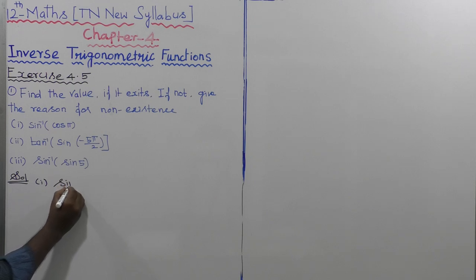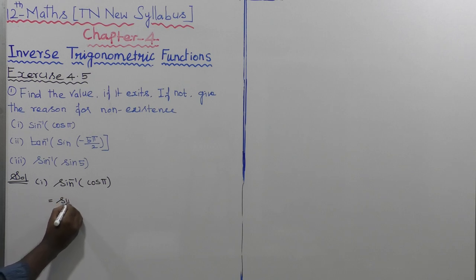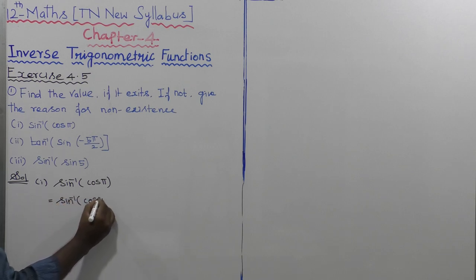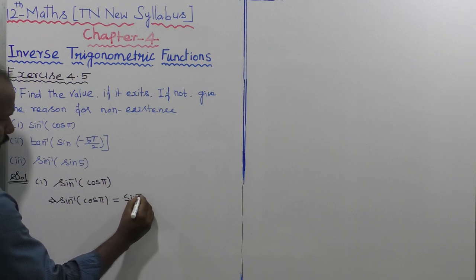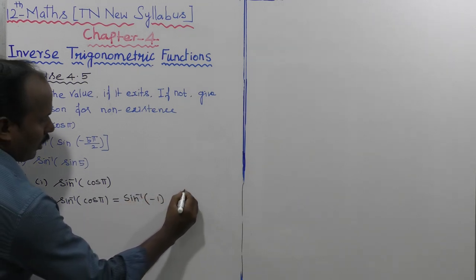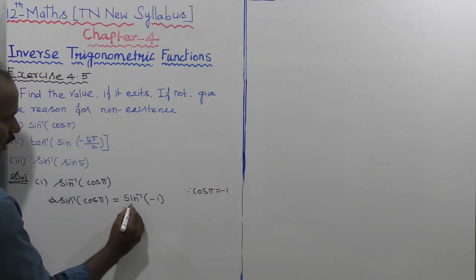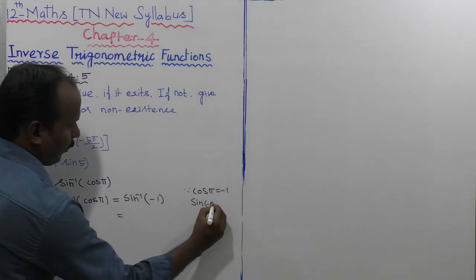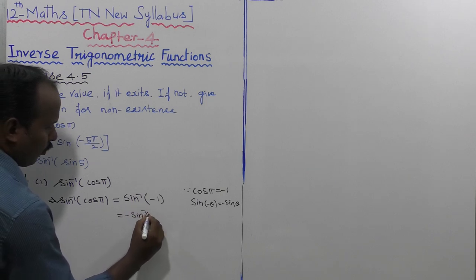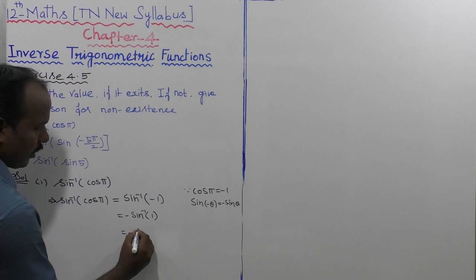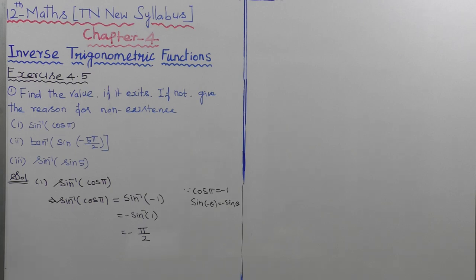First subdivision: sin inverse of cos pi. cos pi is equal to minus 1. Since cos pi equals minus 1, that is equal to sin inverse of minus 1, and sin of minus theta is equal to minus sin theta. So this becomes minus sin inverse of 1, which equals minus pi by 2. First subdivision is completed.